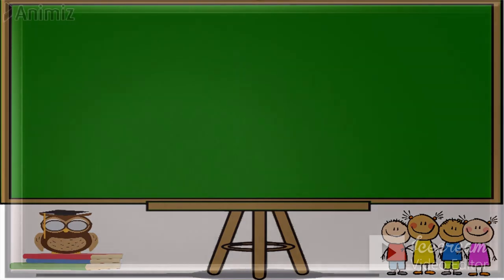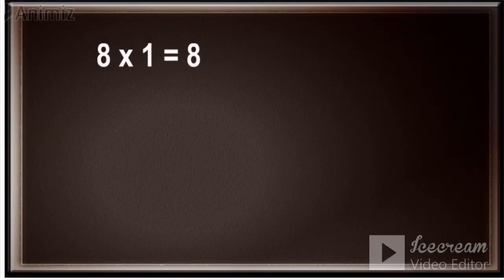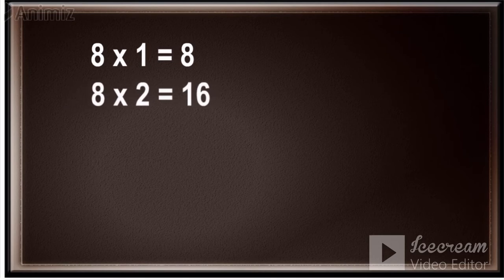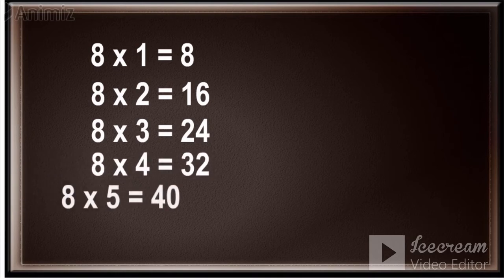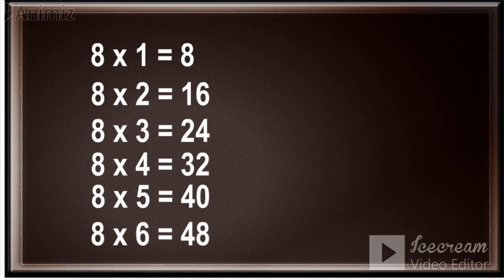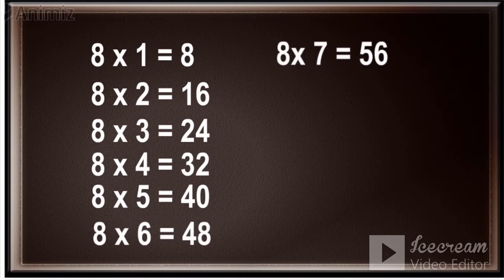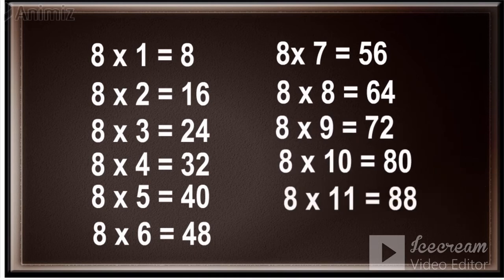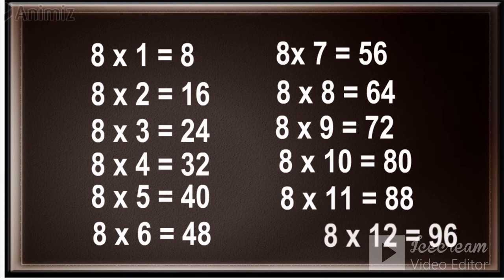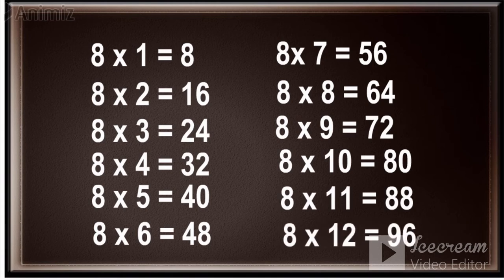Now repeat again. 8 ones are 8, 8 twos are 16, 8 threes are 24, 8 fours are 32, 8 fives are 40, 8 sixes are 48, 8 sevens are 56, 8 eights are 64, 8 nines are 72, 8 tens are 80, 8 elevens are 88, 8 twelves are 96.